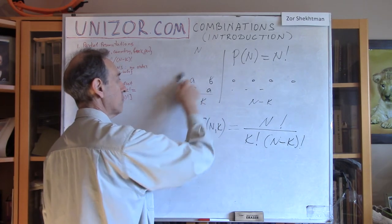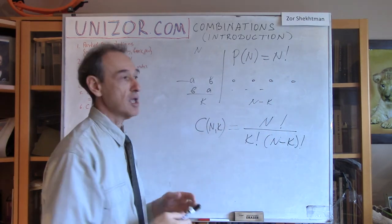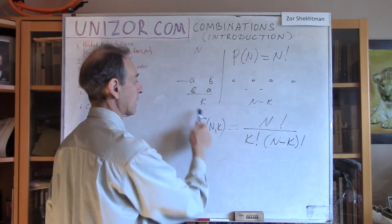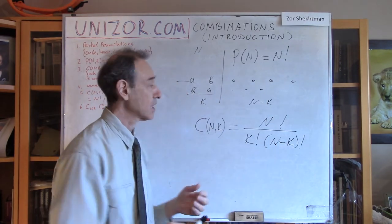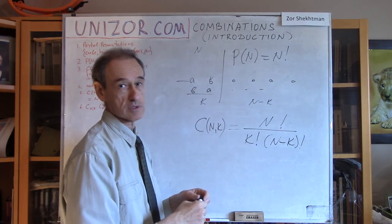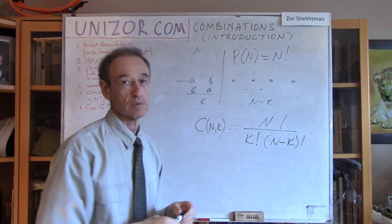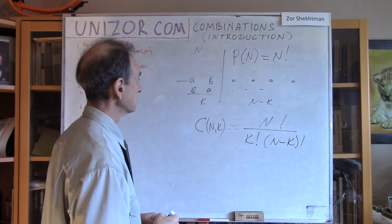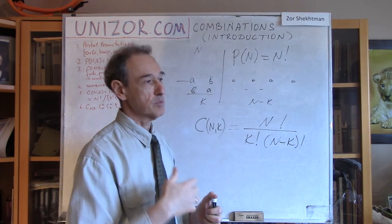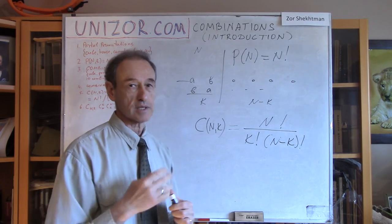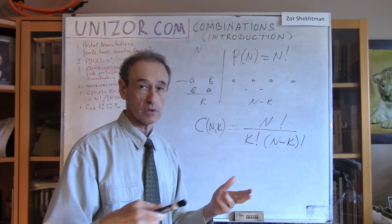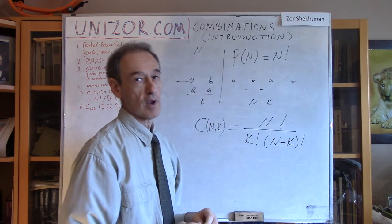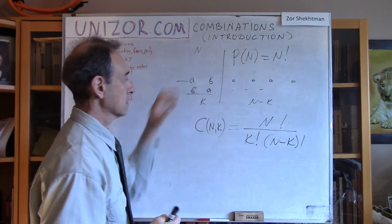Obviously, I have to divide by all the permutations of the left part and all the permutations of the right part, because none of these permutations changes the composition of the subset on the left. On the left I have k factorial, on the right I have n minus k factorial different permutations. So I divide my n factorial — the total number of permutations — by k factorial for the left and n minus k factorial for the right. For each permutation on the left you have as many on the right, and none of them changes the composition. So that's the formula.